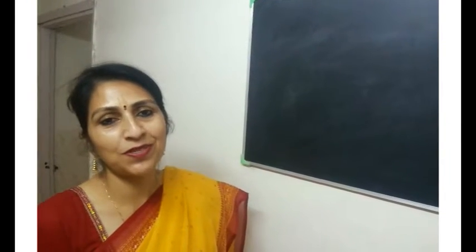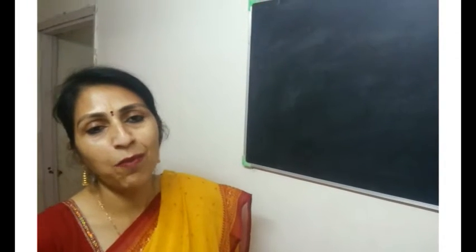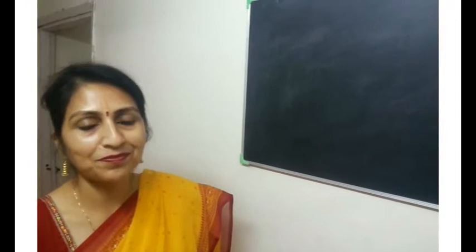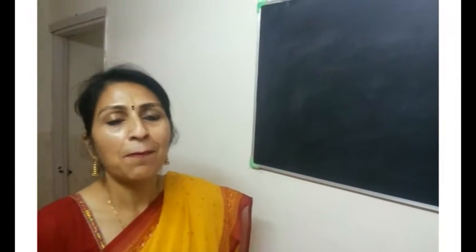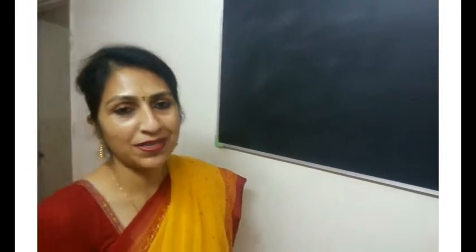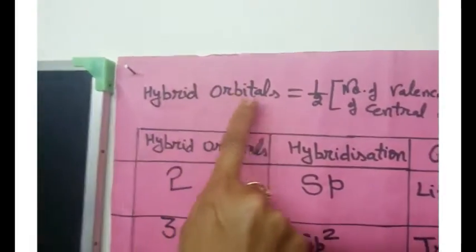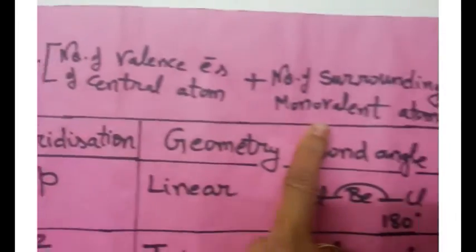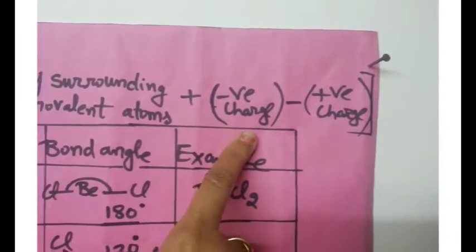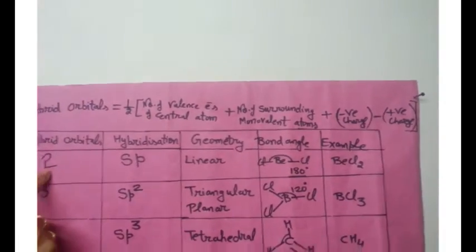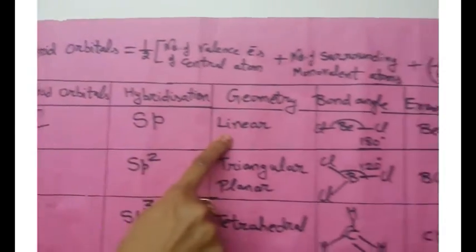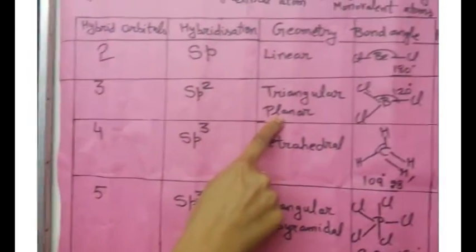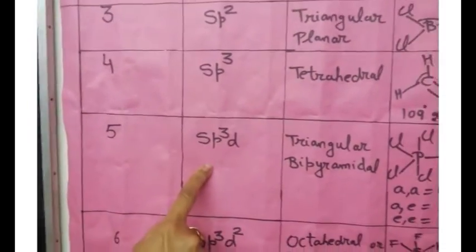Most covalent compounds have a definite geometry. The arrangement of atoms depends upon the bond angle and the number of atoms in them. The geometry of a molecule can be described by hybridization or hybrid orbitals. The formula for finding hybrid orbitals is: hybrid orbitals = ½(valence electrons of central atom + surrounding monovalent atoms + negative charge − positive charge). If the answer is 2: SP hybridization, linear geometry; 3: SP², triangular planar; 4: SP³; 5: SP³D; 6: SP³D²; 7: SP³D³.